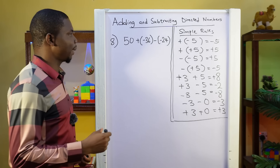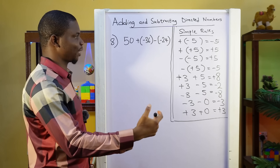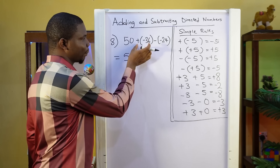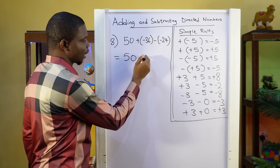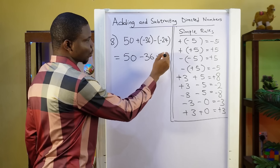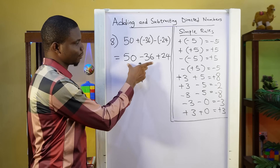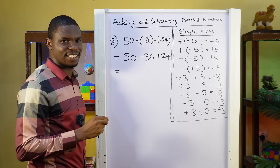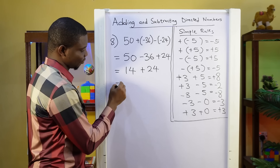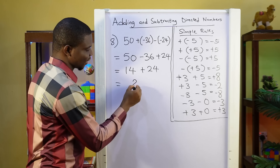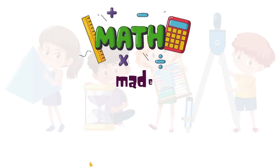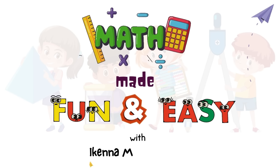Question 8: 50 plus minus 36 minus minus 24. First we open the brackets: 50. Positive doesn't change the sign inside the bracket, so that remains minus 36. Negative changes the sign inside the bracket, so that will be plus 24. We take them two at a time: 50 minus 36 is 14. Then plus 24: 14 plus 24 is 38. So our answer is 38.